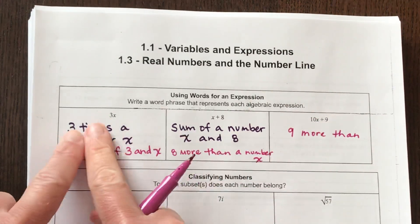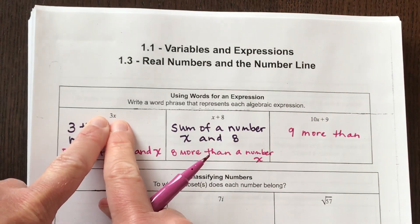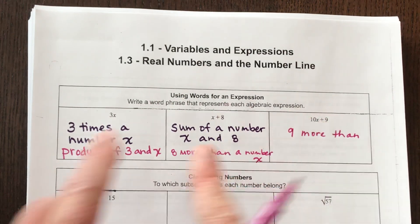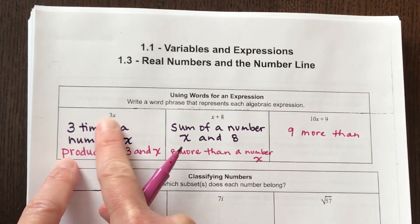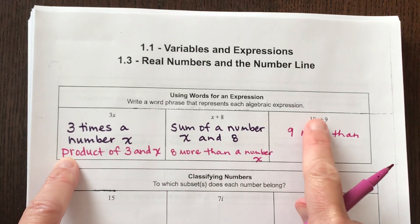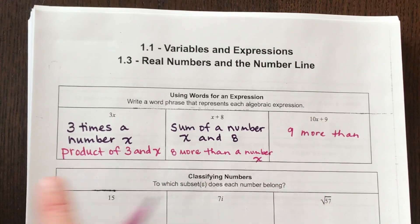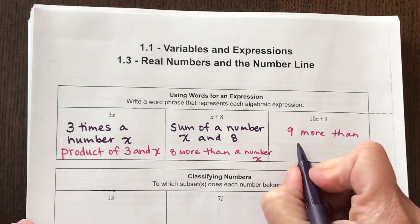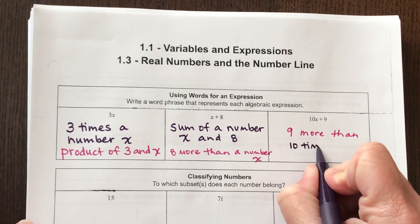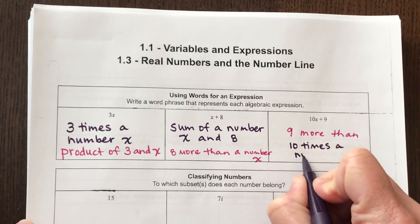What would this guy be? Think about what we did over here. 3x. Here I have 10x. So I'm going to copy a phrase similar to this. So instead of 3 for this one, I have 10 for this one. So I'm going to write 10 times a number x.